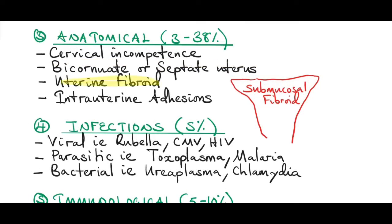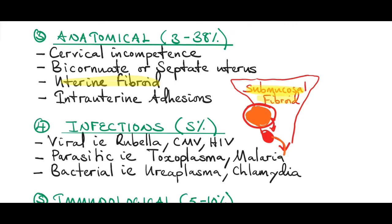Another anatomical abnormality is a uterine fibroid. Uterine fibroids are responsible for causing subfertility as well as miscarriages. Submucosal fibroids are especially implicated because they grow within the endometrium and myometrium, taking up space. If a fetus implants at the same anatomical site, it would be competing with the fibroid for blood supply and space — and the fibroid wins, resulting in a miscarriage. Submucosal fibroids also cause endometrial irritability, which can result in uterine contractions and miscarriage.